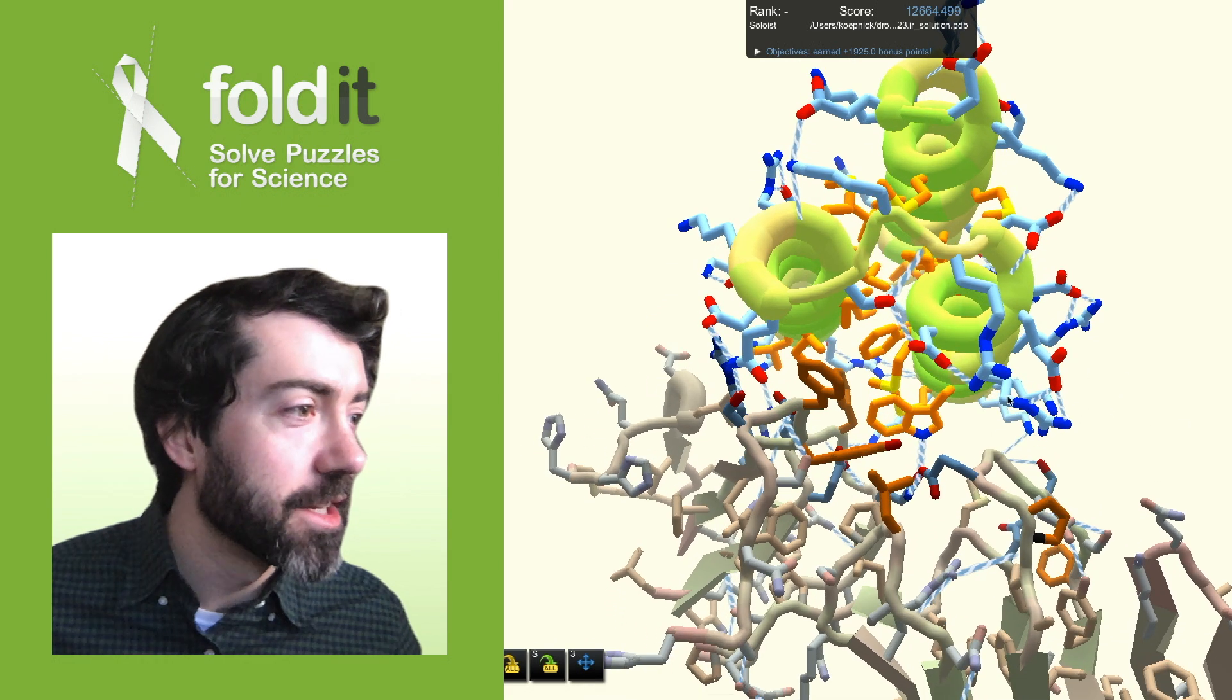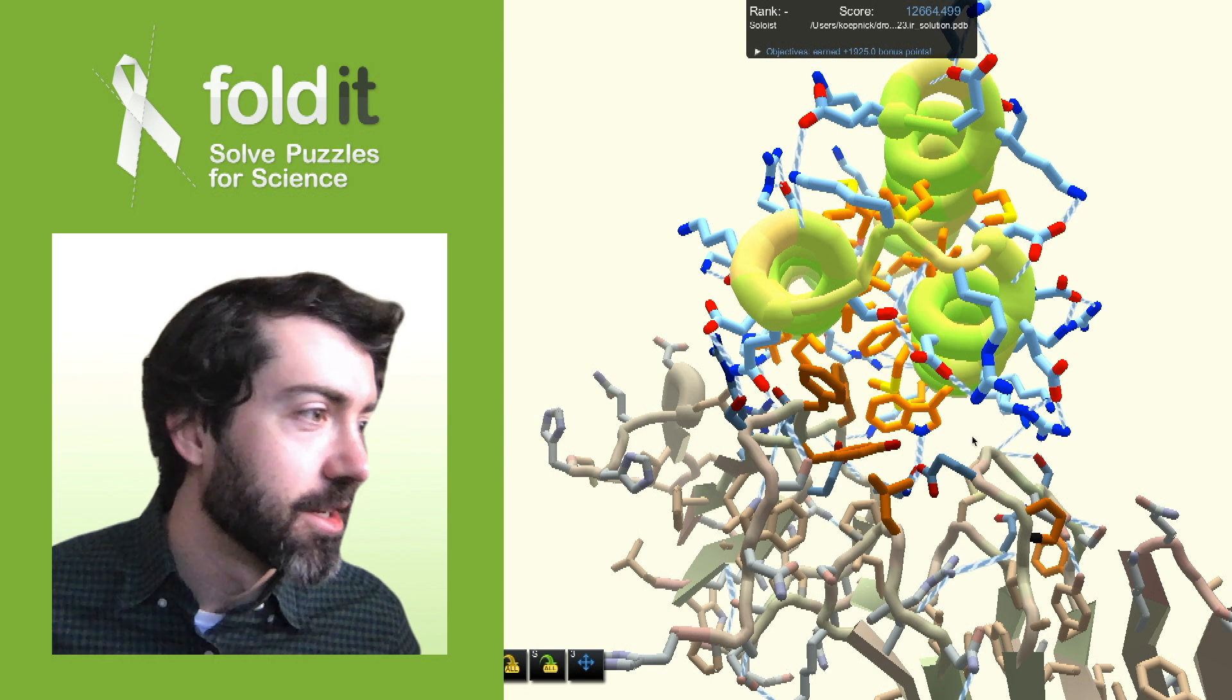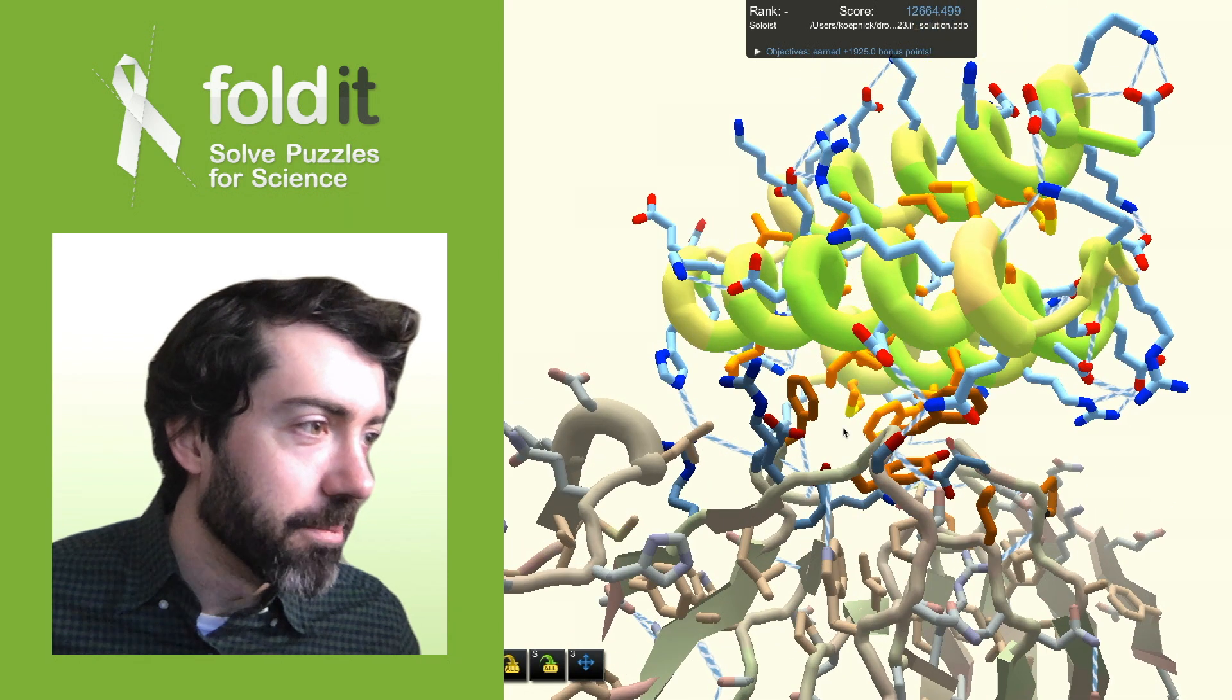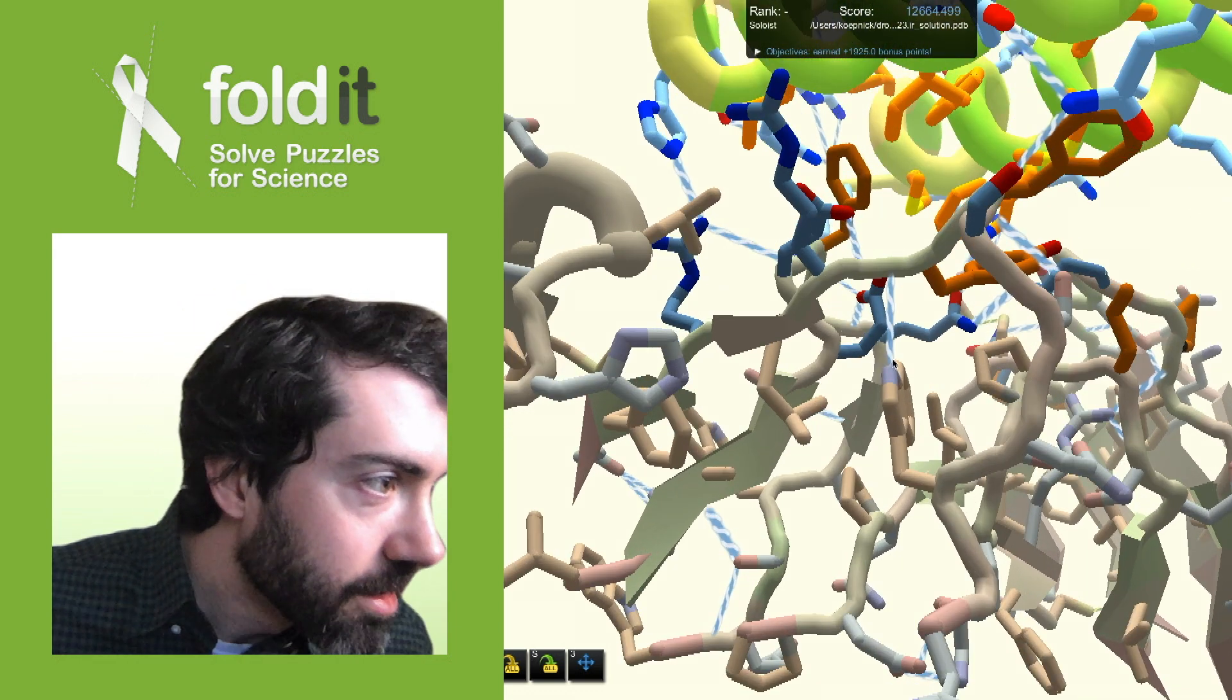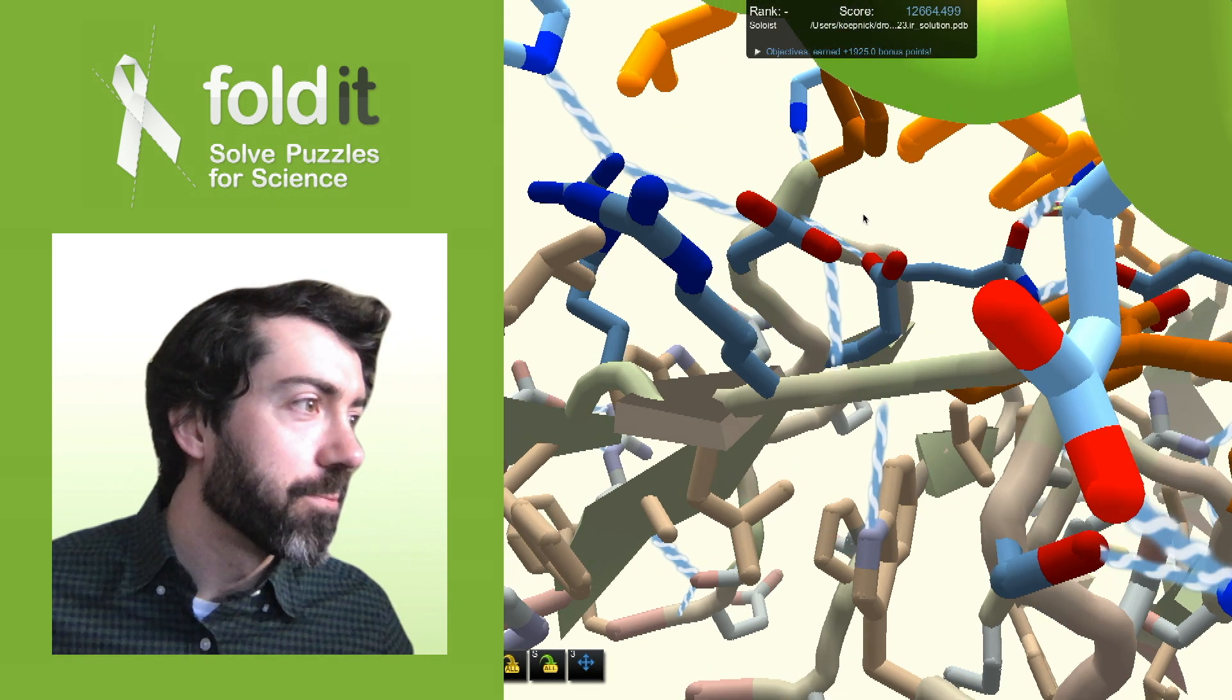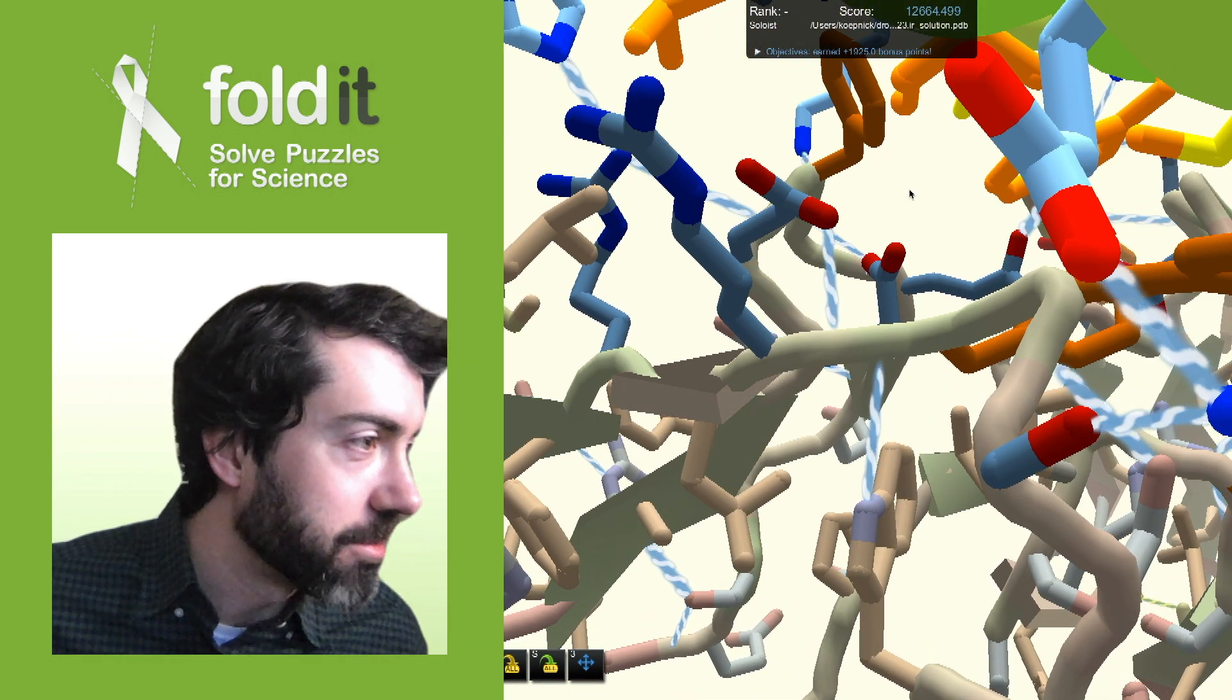At the binding interface, we see lots of orange contacts, which is good. It makes strong binding and some nice hydrogen bonding. We do want to be careful about burying some polar groups. There is a glutamate down here that might not be able to make all of the hydrogen bonds it needs to. But aside from that, this looks like an excellent structure, very promising.